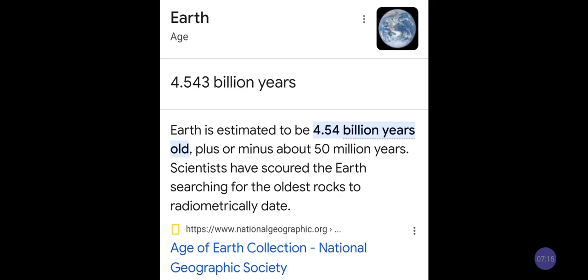It could be plus or minus about 50 million years. Scientists have scoured the earth searching for the oldest rocks to radiometrically date. But we don't know whether particles more or less got into like carbon because of other geological things that may have happened to be a one-off. But one thing we know, it's definitely beyond 6,000 years.